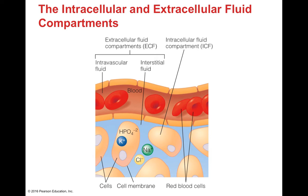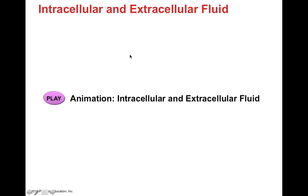The extracellular fluid compartments include the vascular fluid — the blood plasma — and the interstitial fluid that bathes the cells. There is always cross-talk between the two: things pass from intravascular fluid into interstitial fluid and vice versa, and then the interstitial fluid delivers nutrients into the cell while waste crosses from the cell into the interstitial fluid and then into the vascular fluid for excretion.